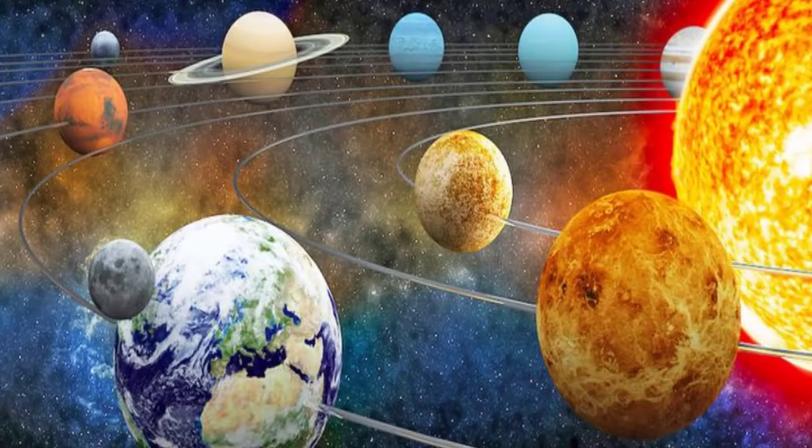Our solar system is a framework which consists of the sun, other stars, the eight planets and their moons, asteroids, meteoroids and other celestial bodies in space.